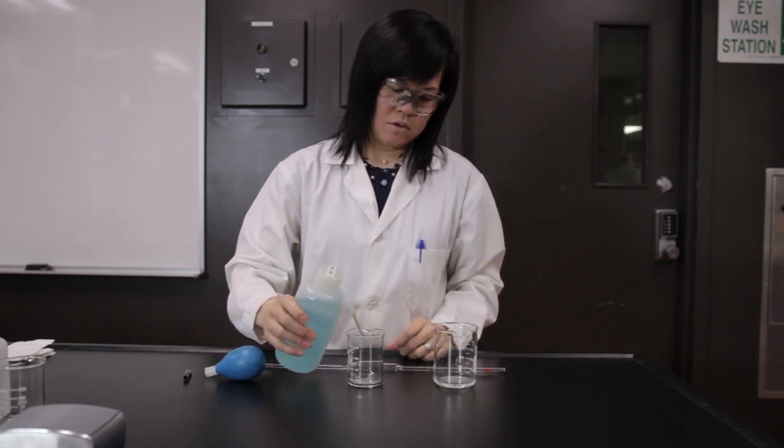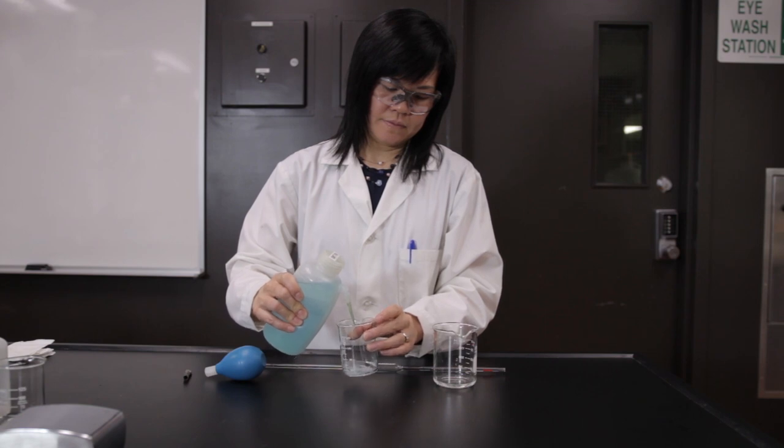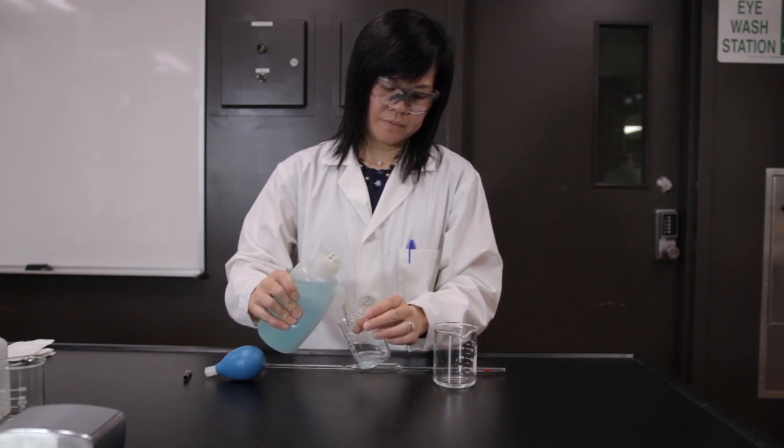Add a sufficient amount of unknown copper ion solution into a clean, dry, small beaker and rinse the pipette two times.